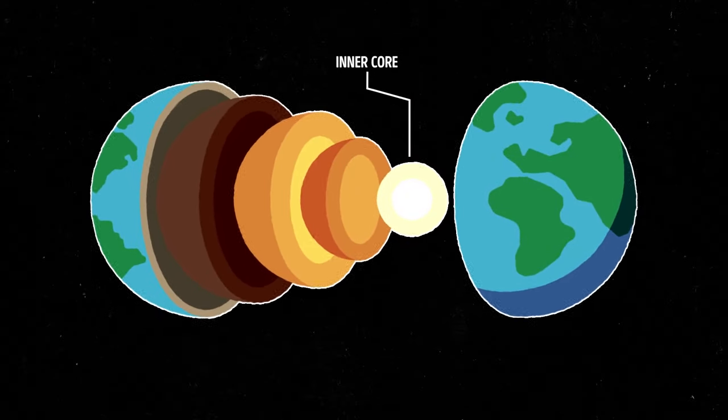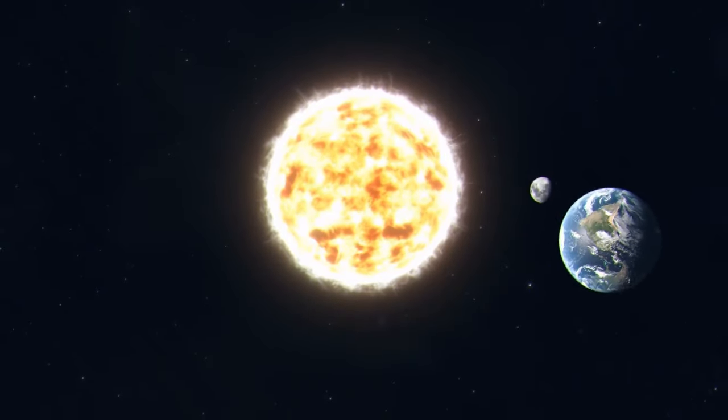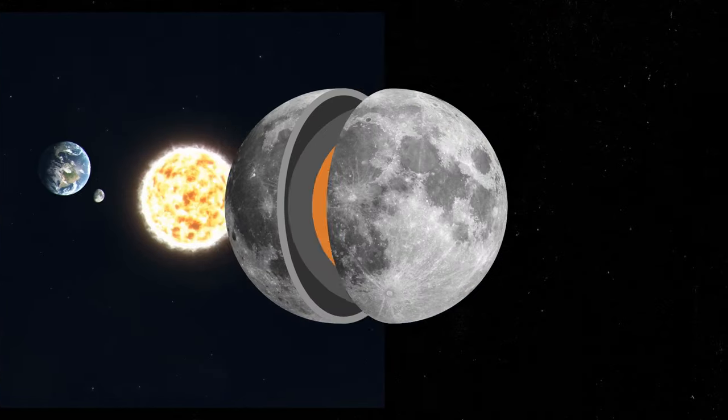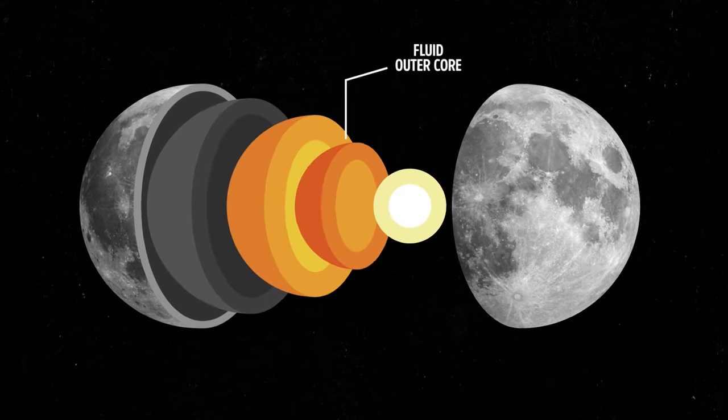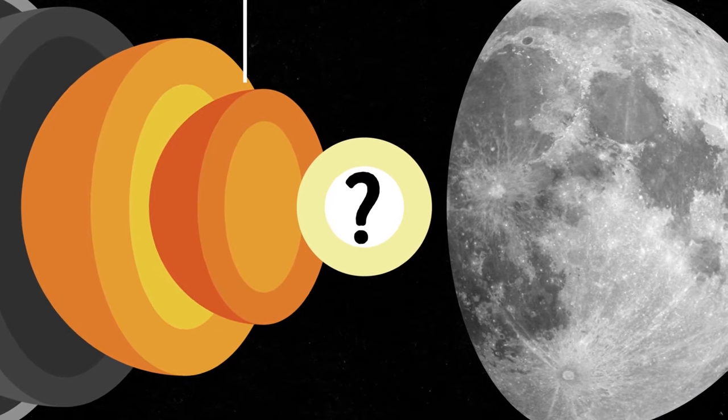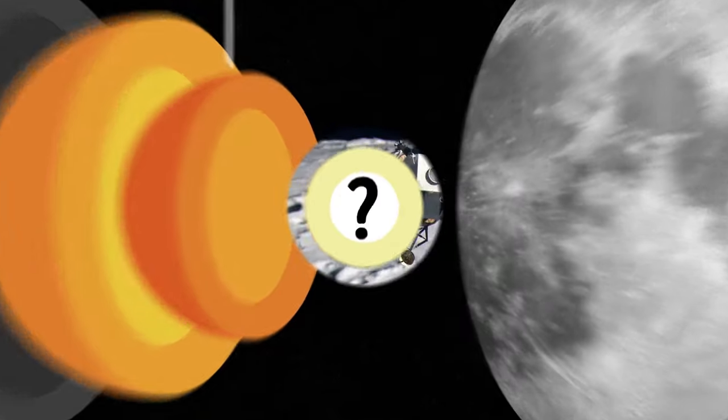One of these layers is called the inner core. About 20 years ago, scientists were observing how the moon rotates. Using that data, they concluded that it had a fluid outer core. But the inner core was hard to study, so they didn't know if it was solid like a rock or molten like a hot liquid.